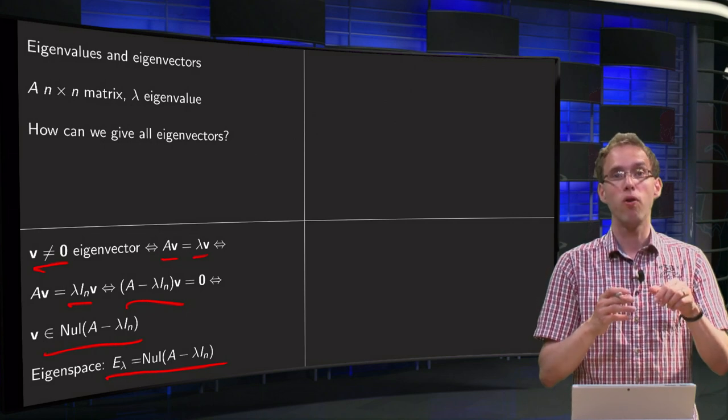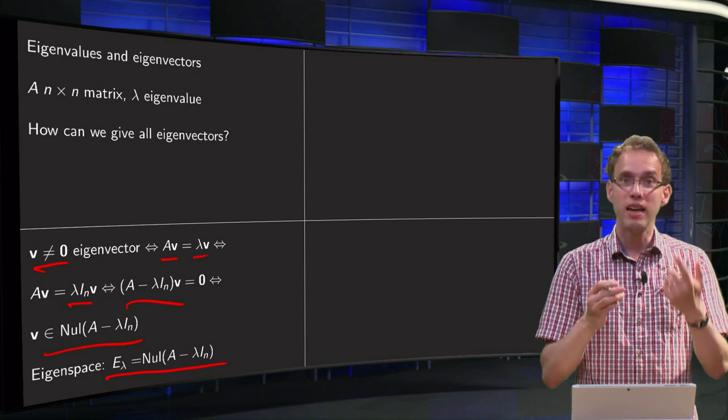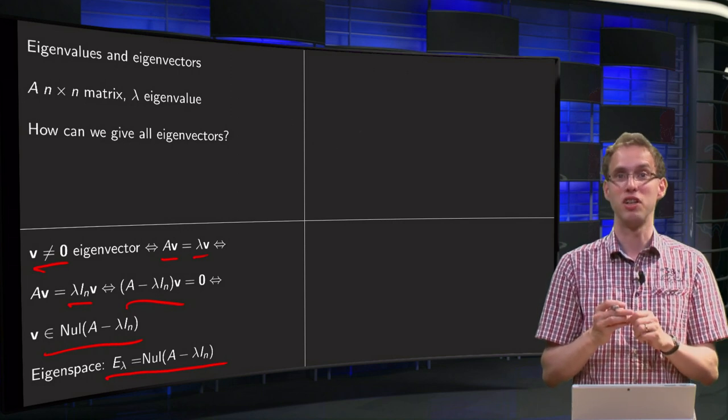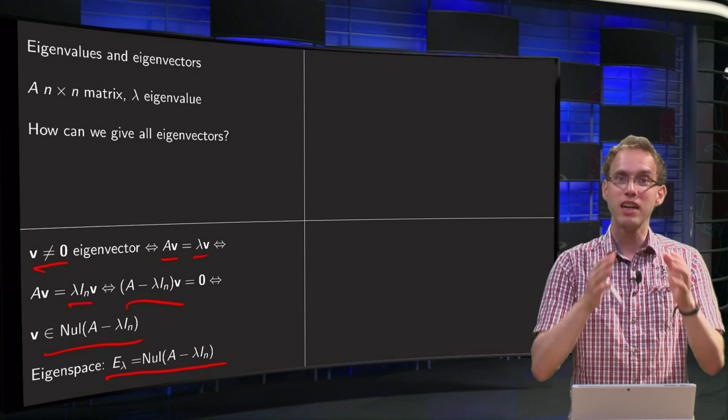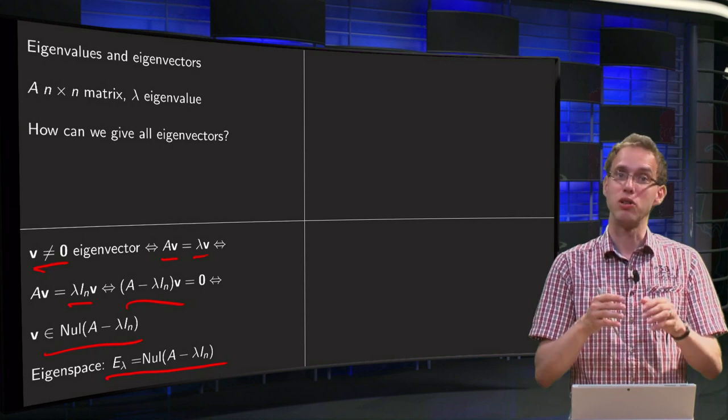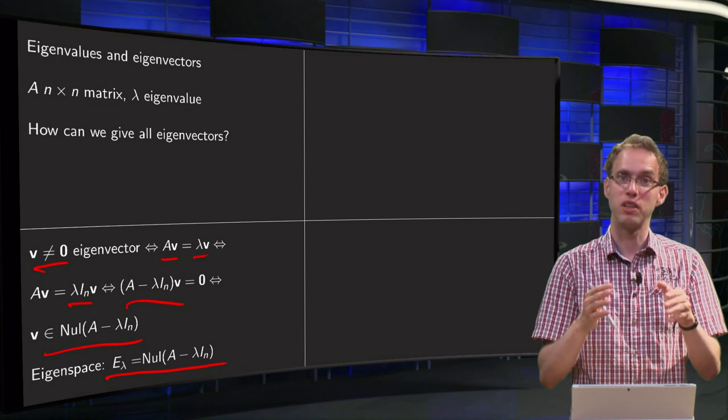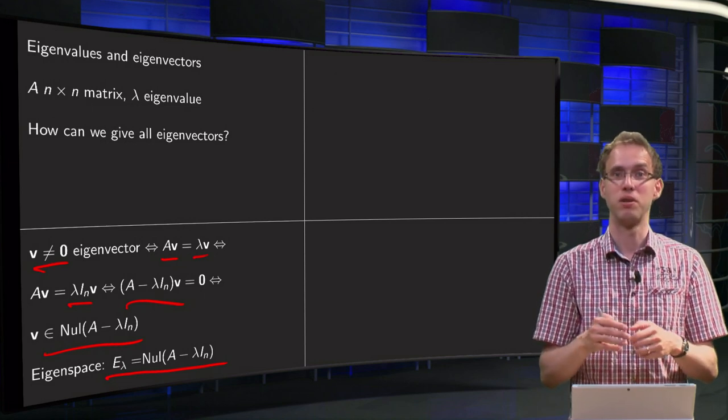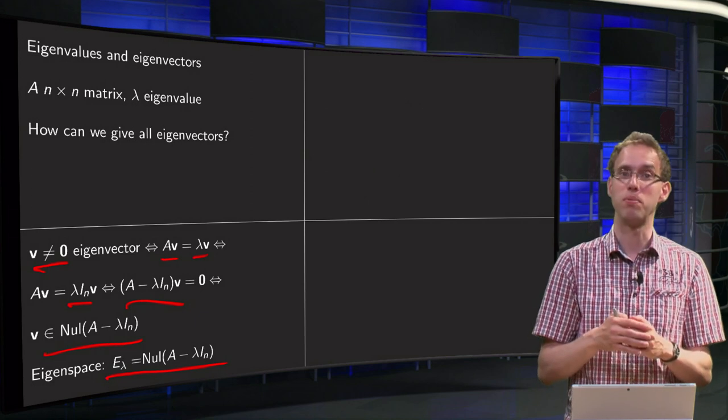Notice that all vectors in the eigenspace are eigenvectors of A, except for the zero vector. So the eigenspace is a collection of all eigenvectors belonging to the matrix A with this particular eigenvalue lambda plus the zero vector, because we turn it into a subspace.